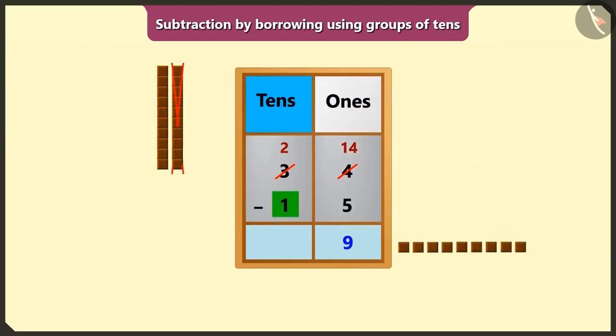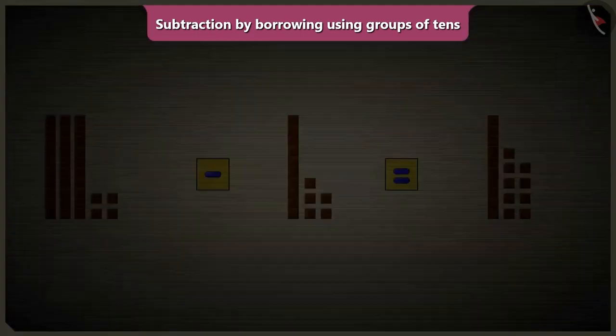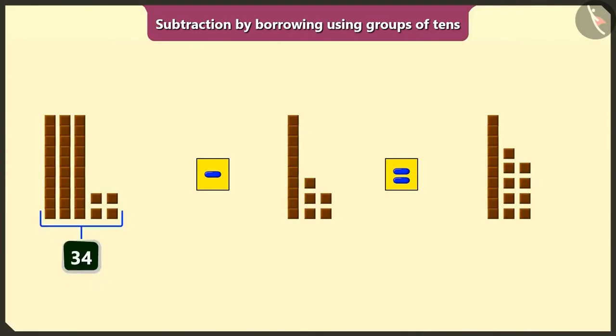Now if we subtract 1 tens from 2 tens in the place of tens, then we will have 1 tens left. So we will write 1 in the box of tens. So this way, if we eat 15 chocolates from 34 chocolates, then we would have 19 chocolates left.